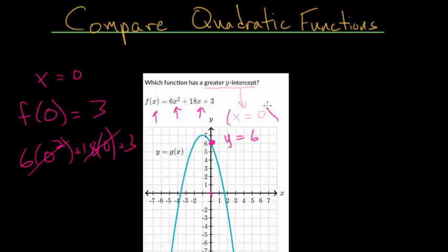The nice thing about standard form is that you can very quickly find the y-intercept. Because notice that these first two terms with x in it, they just go away because that's 0 and 0. And so f of 0, our y value when x is 0, is 3. So which one of these has the greater y-intercept? Well, that would be g of x. Since f of x has a y-intercept of 3 and would be going through somewhere right here. Now, we don't know the rest of the graph, but we do at least know that.